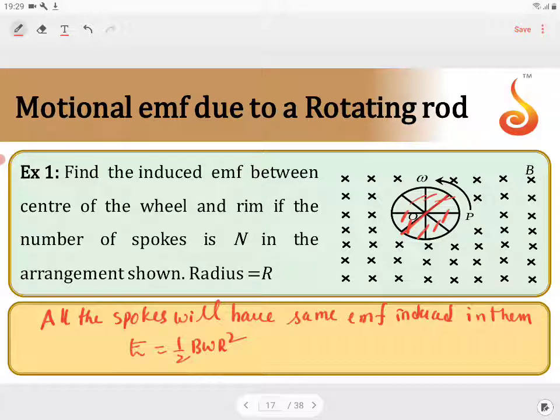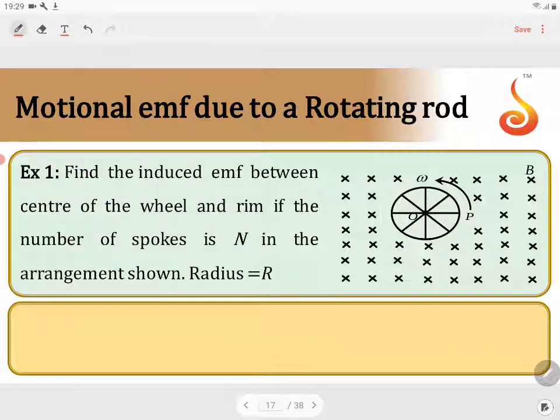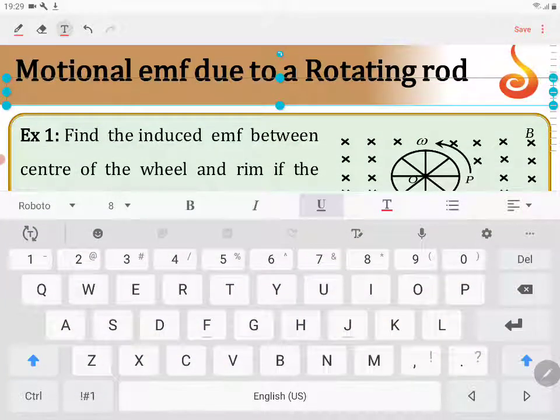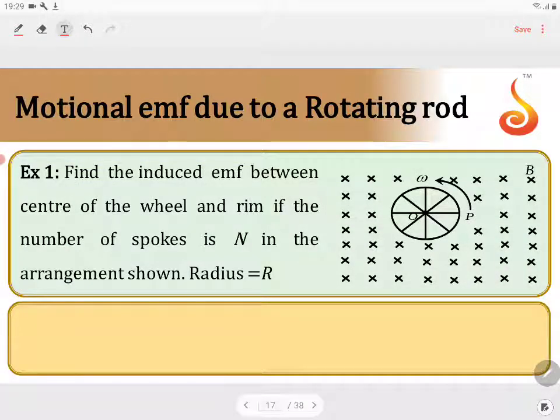When you have n identical cells in parallel, the effective EMF is equal to one of the EMFs, and the effective internal resistance will be equal to R/n.